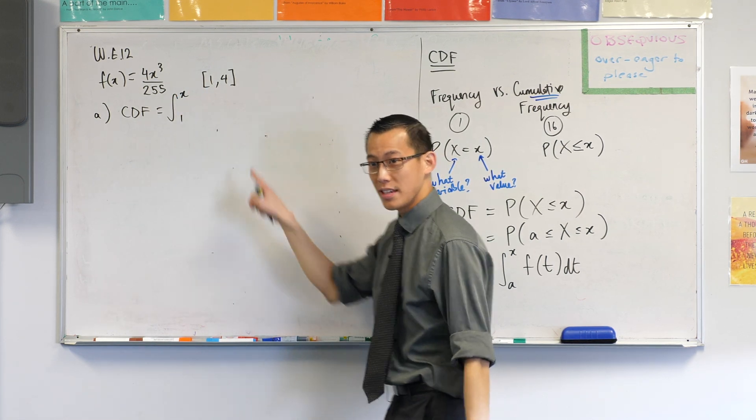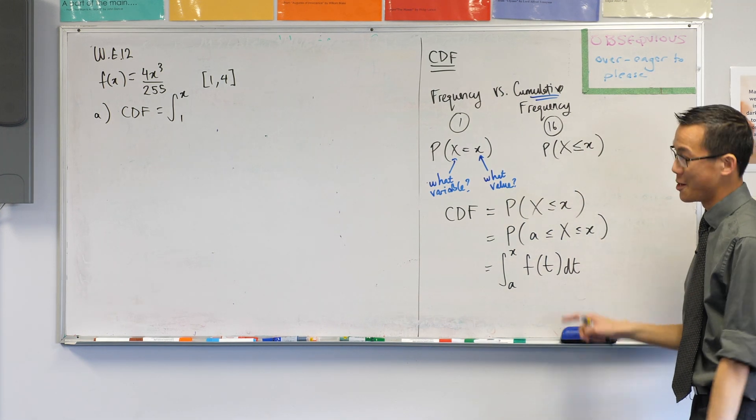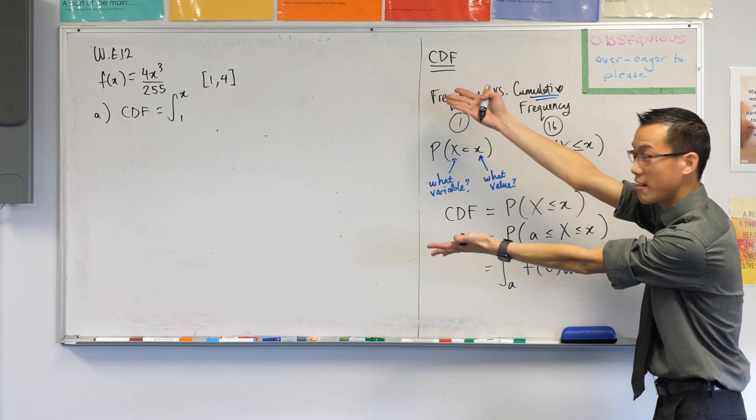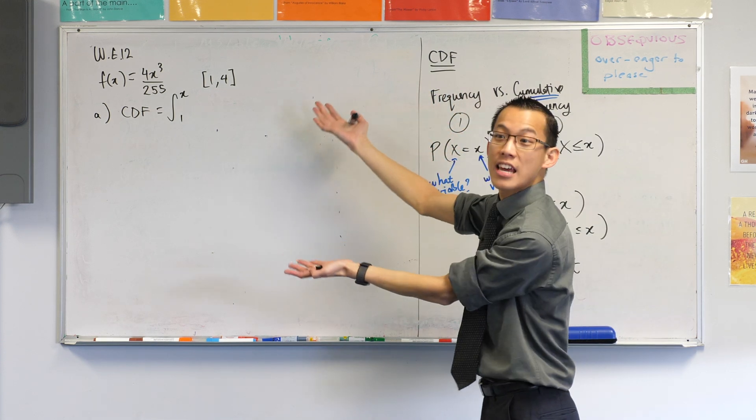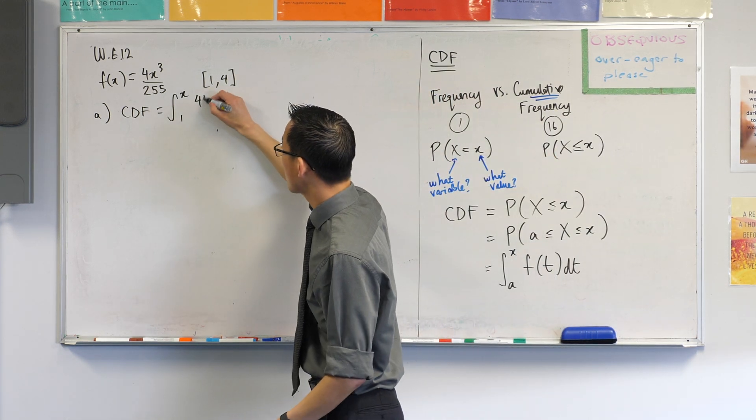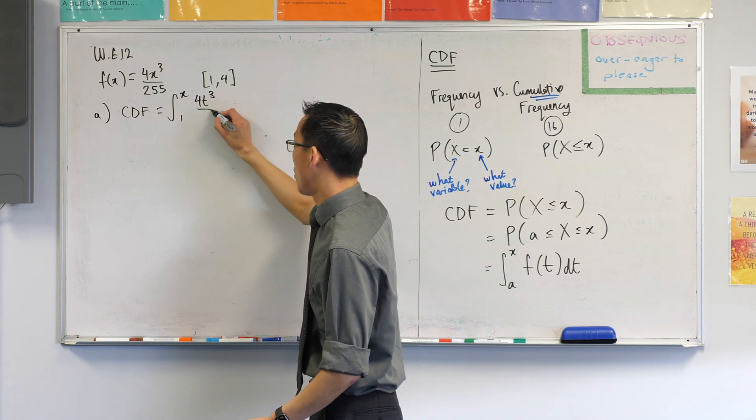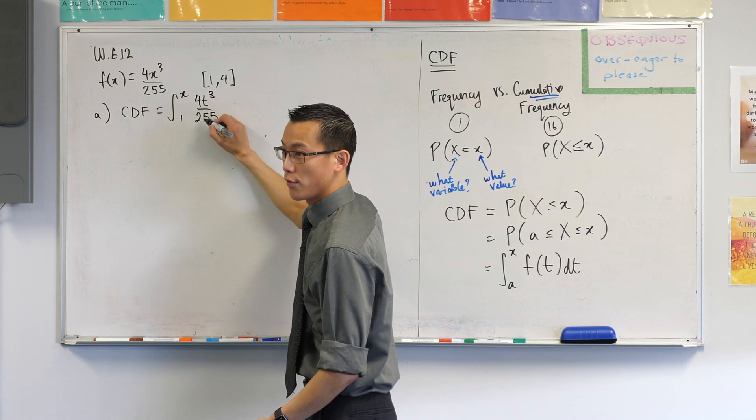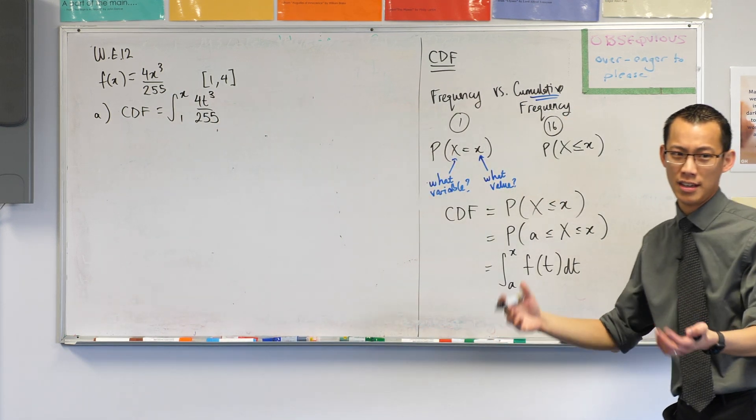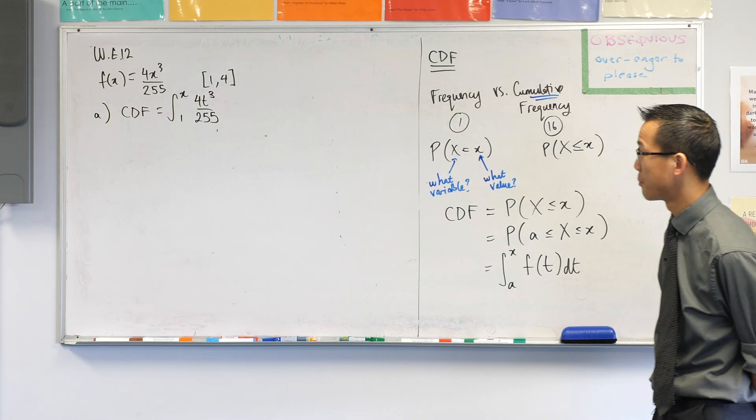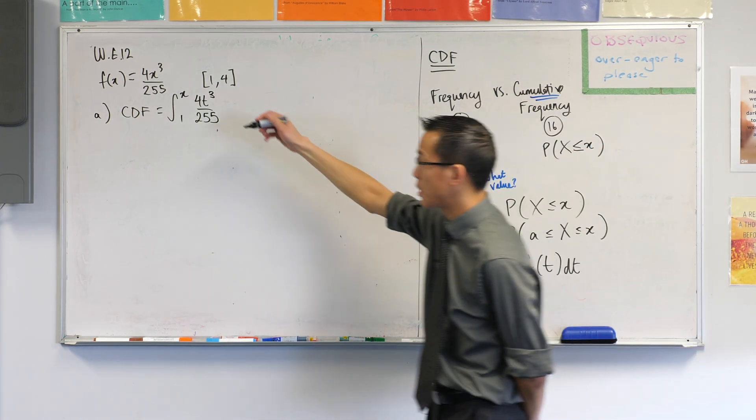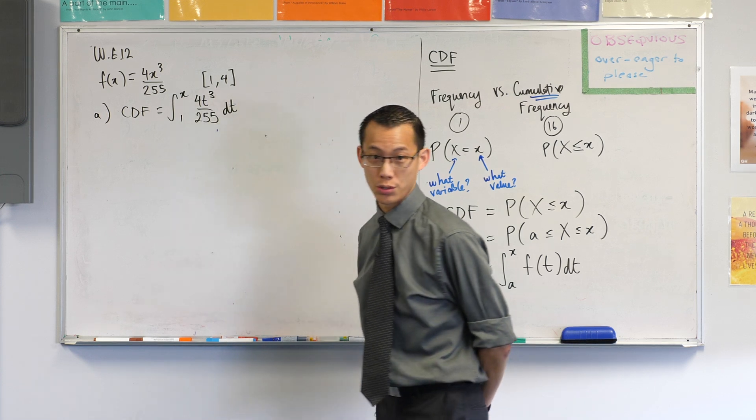Now, the next thing that happens is f of t. See how they gave us an f of x? I'm going to write that, but with t's instead of x's, so here it comes: 4t cubed on 255. So it's the same old function, I'm just dressing it up slightly differently. Since it's all in t's now, I'm going to integrate with respect to t.